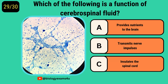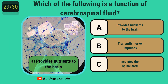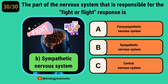Which of the following is a function of cerebrospinal fluid? Provides nutrients to the brain. The part of the nervous system that is responsible for the fight and flight response is? Sympathetic nervous system.